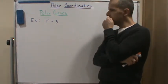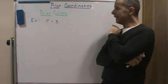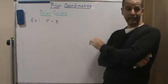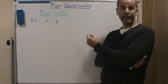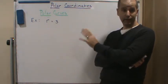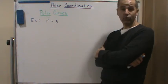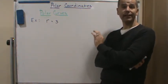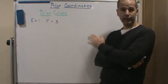This means it doesn't matter what theta is. Theta can be anything, and the radius will always be 3 regardless of the angle. So immediately I know this is going to be a circle centered at the origin with radius of 3.